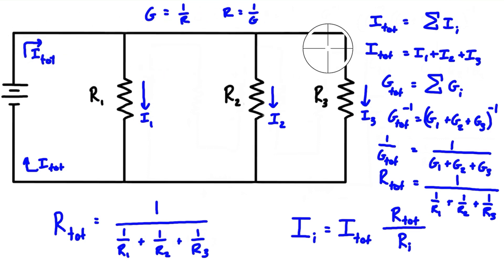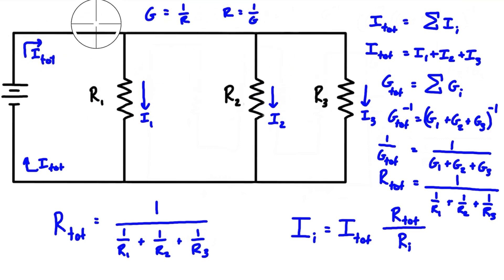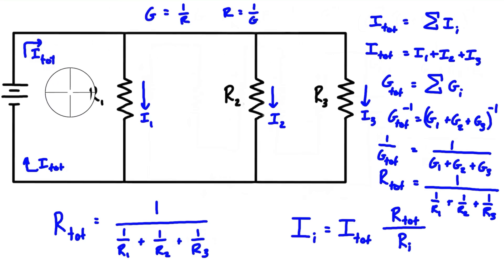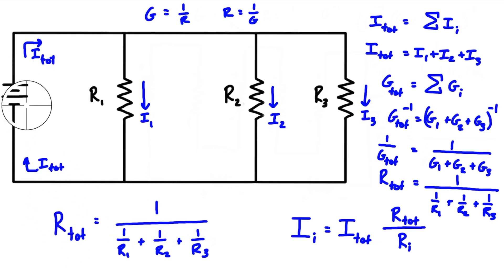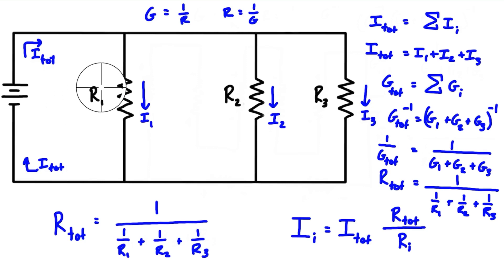This equivalent resistance means we could remove the three parallel resistors and replace them with one single equivalent resistor. As long as that resistor has the calculated value, the voltage source cannot tell the difference between one equivalent resistor and the three actual parallel resistors.